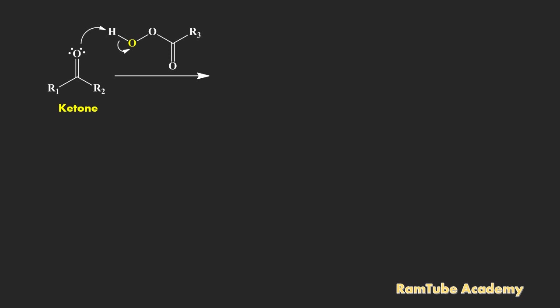The lone pair of electrons of carbonyl oxygen abstracts proton from peroxy acid and forms this activated electrophile along with the conjugate base of the peroxy acid. This conjugate base acts as nucleophile and attacks on the electron deficient carbonyl carbon and forms this intermediate product.